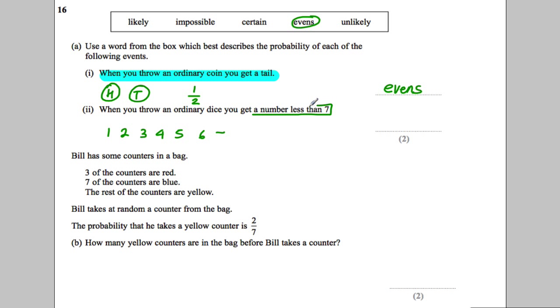What's the probability you get a number less than seven? Well, all of these are less than seven, so you've got six possibilities out of six. Six out of six is one, so the probability is one. Which word describes a one? A certain event. Well, certain.